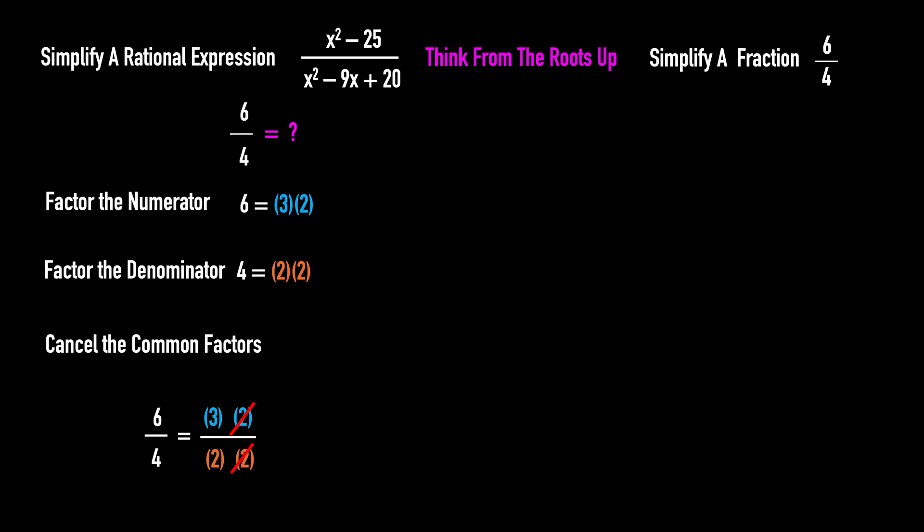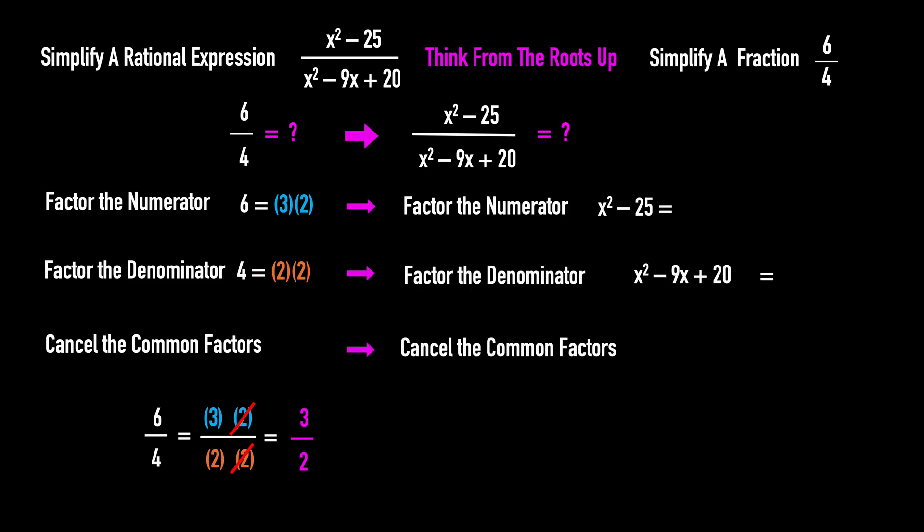Cancel the twos, we have 3 over 2. We do the same thing here. Let's factor the numerator and the denominator, then cancel the common factors.